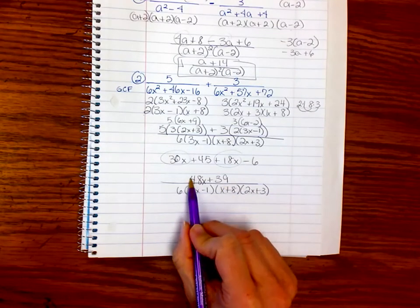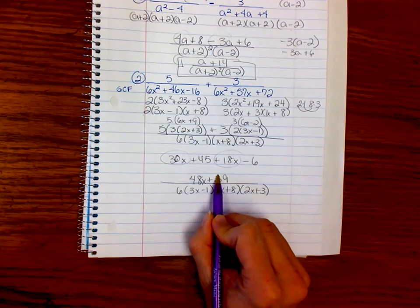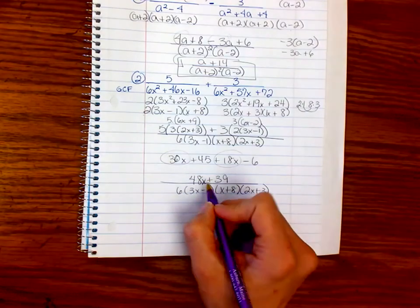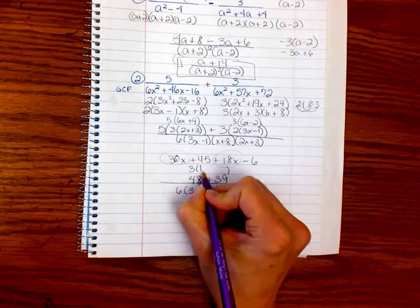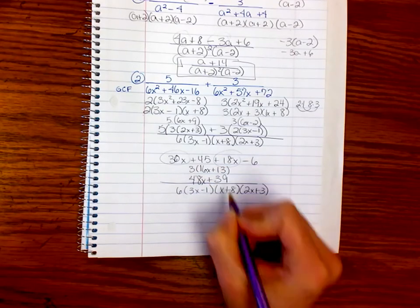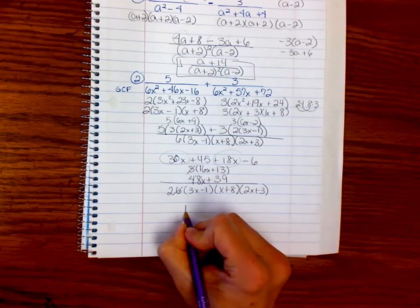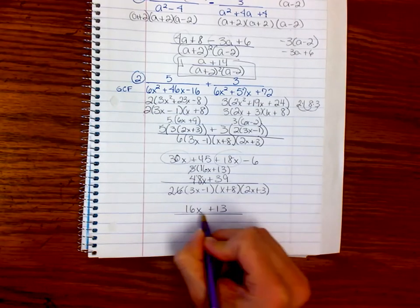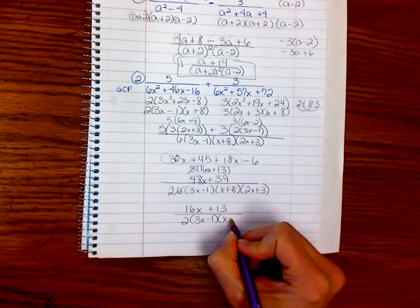And I always want to see if there's maybe any common factor going on here. Those are both divisible by 3. So, a 3 could cancel out. So, let's factor out a 3 from this 48 and this 39. 3 goes into 48, 16 times. And 3 goes into 39, 13 times. So, we could reduce this. They're both divisible by 3. So, our final answer is 16x plus 13 over 2 times 3x minus 1 times x plus 8 times 2x plus 3. And I did end up writing it again because it was reducible.